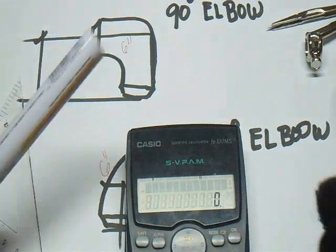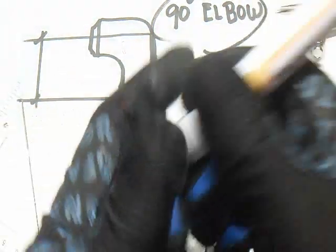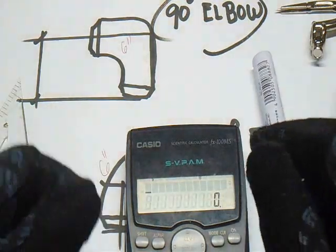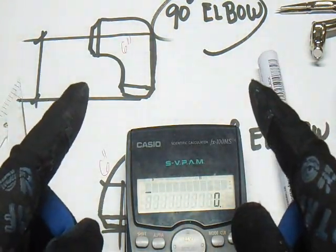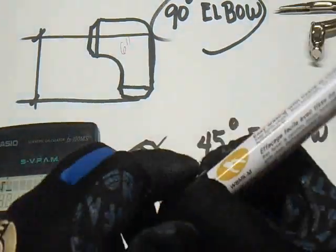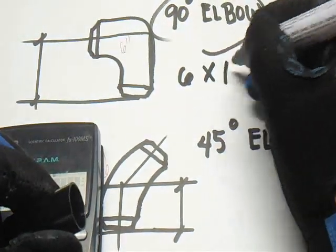So our formula for the 90 degrees: nominal pipe size multiply it by 1.5 or 38.1. For example, 6 inches multiplied by 1.5.